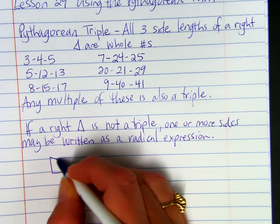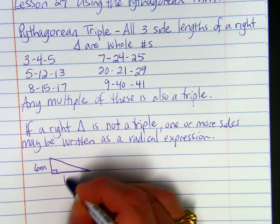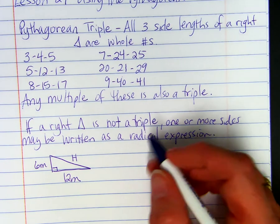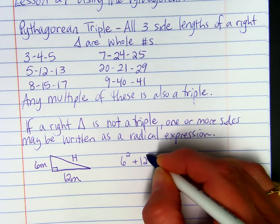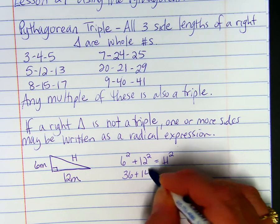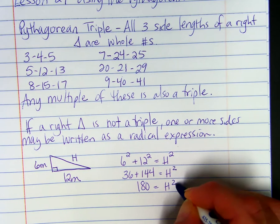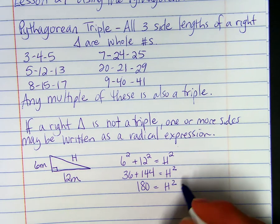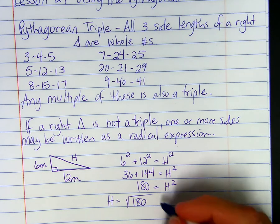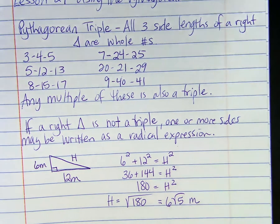Here's an example. We have a right triangle where one side length is 6 meters and the other is 12. Find the hypotenuse. We can use the Pythagorean Theorem: 6 squared plus 12 squared equals h squared. So 36 plus 144 equals h squared, which gives us 180. The hypotenuse is the square root of 180, which simplifies to 6 root 5 meters.